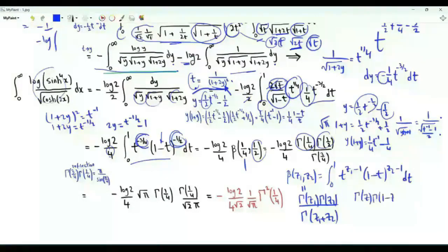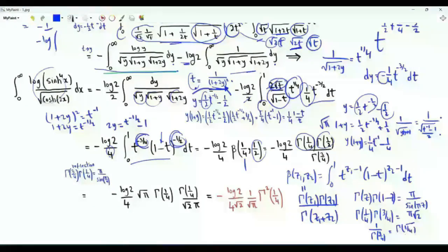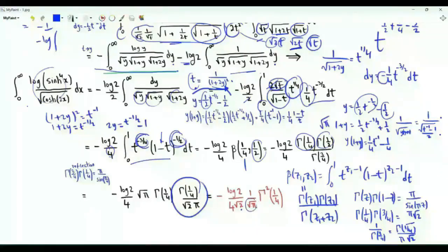When z is not an integer, the reflection formula gives Γ(z)·Γ(1 minus z) equals π over sin(πz). With z = 1/4, we get Γ(1/4)·Γ(3/4) equals π over sin(π/4), which is π times the square root of 2. Thus 1 over Γ(3/4) equals Γ(1/4) divided by (π times the square root of 2). The integral of interest is therefore minus log 2 over 4 times the square root of 2 times 1 over the square root of π times the square of Γ(1/4).